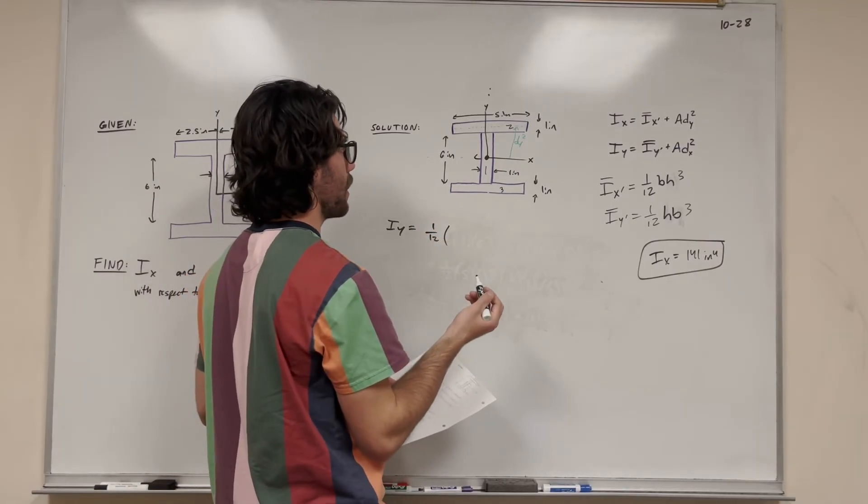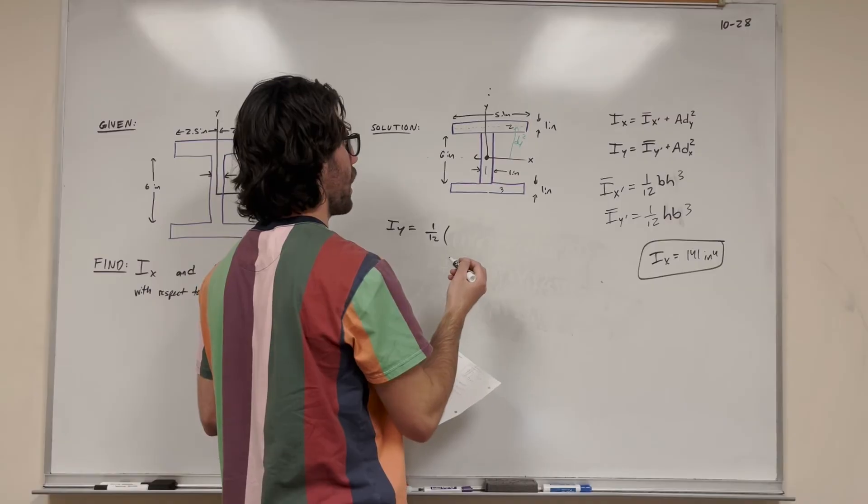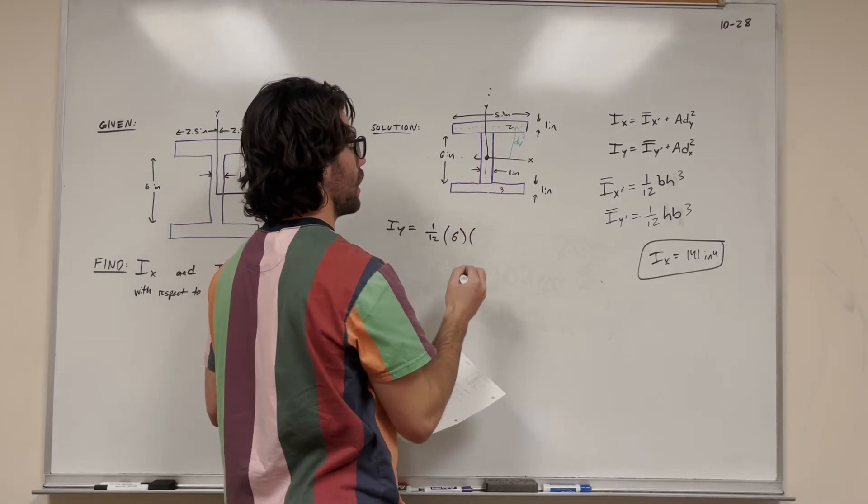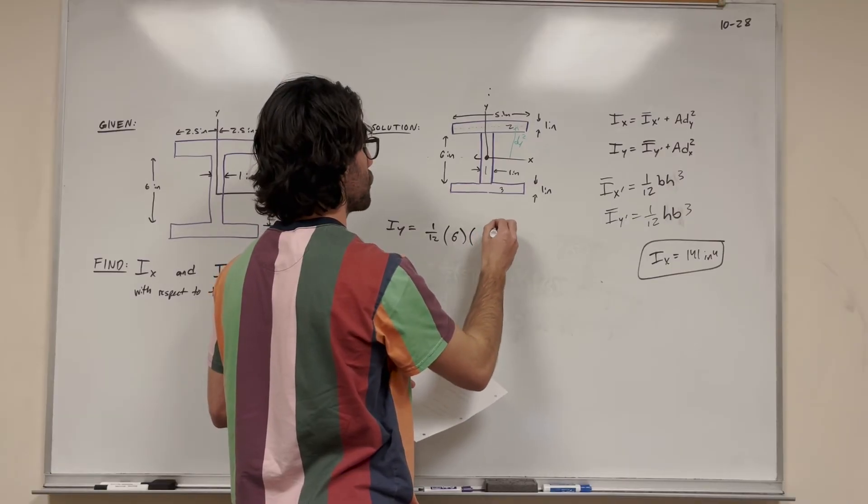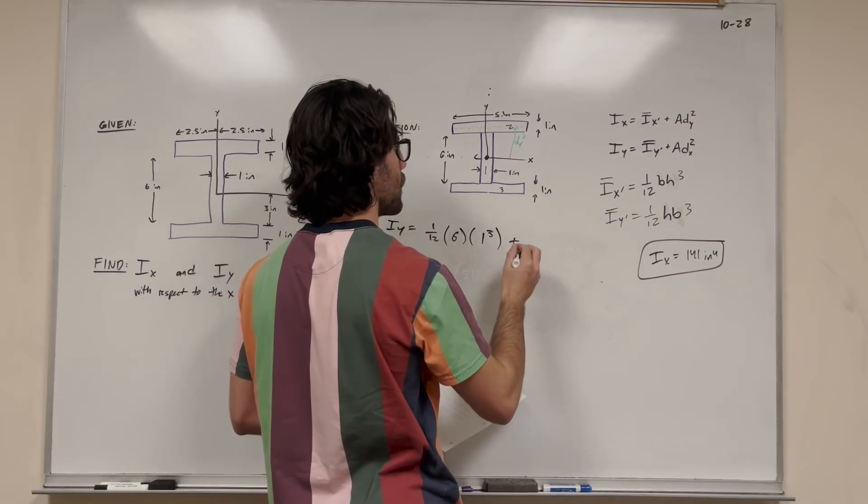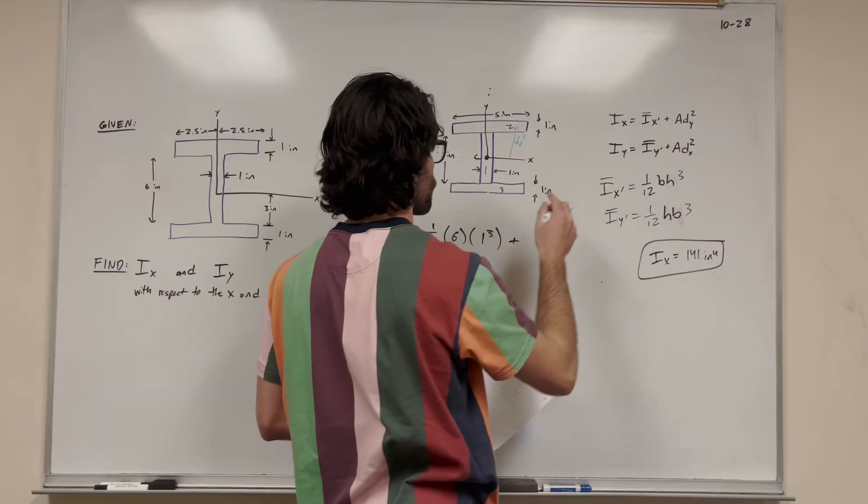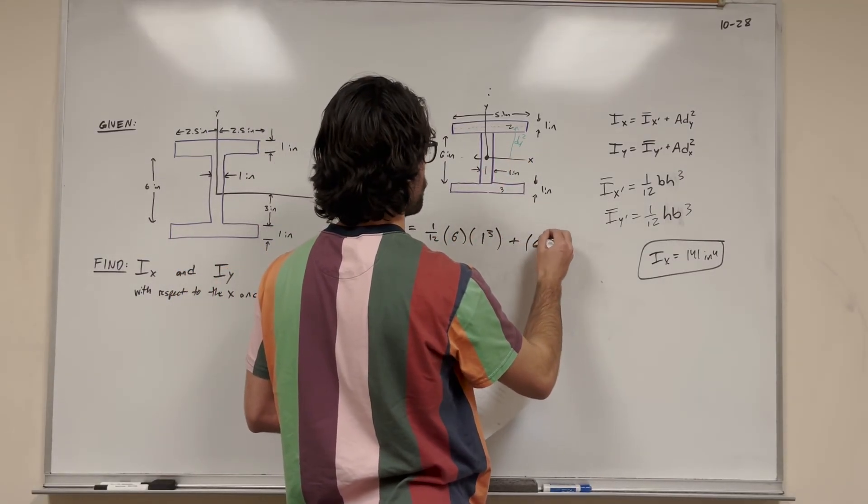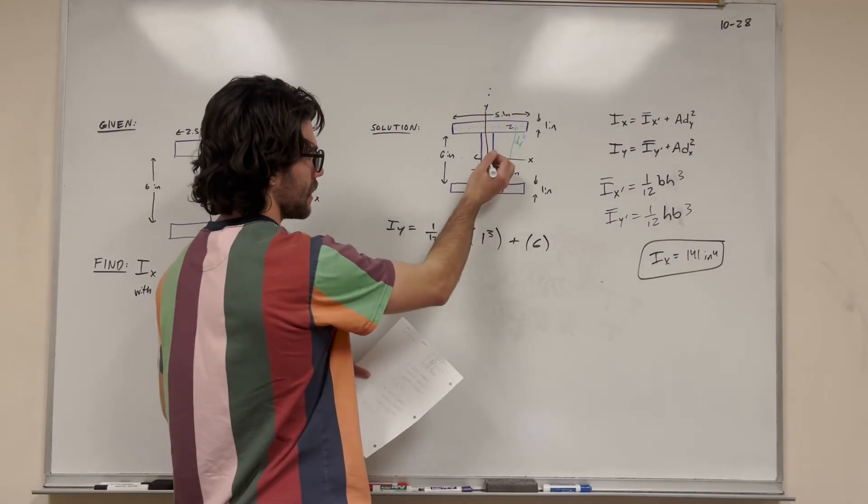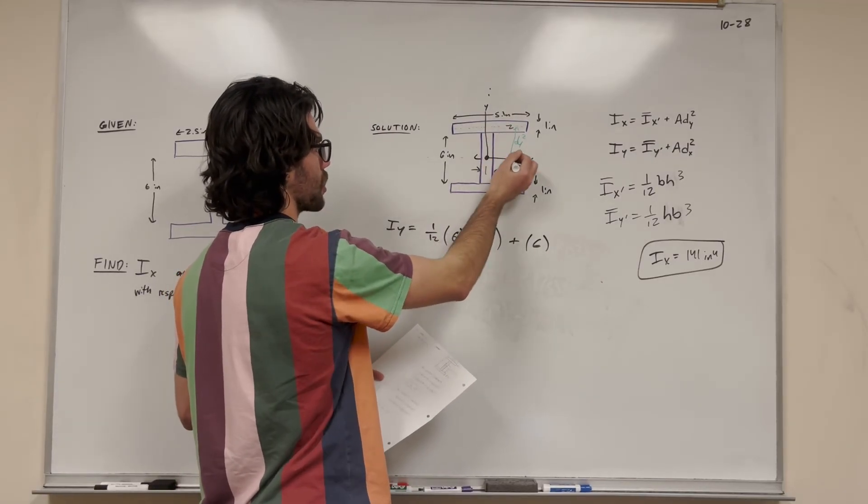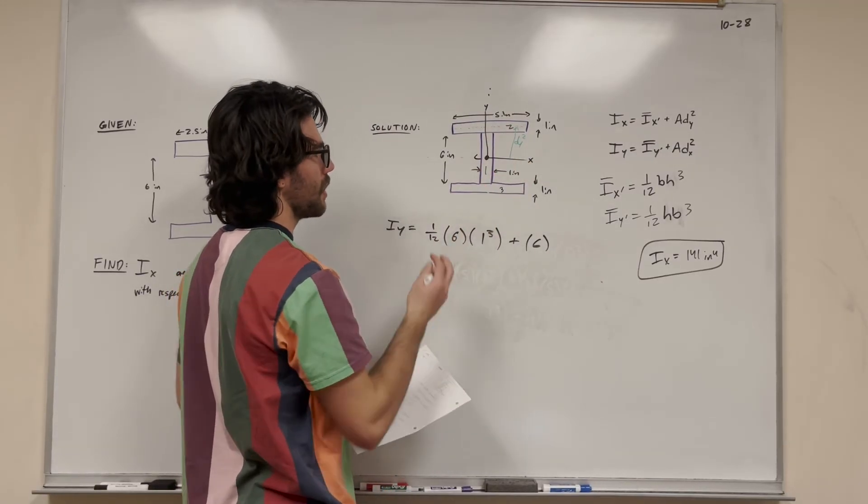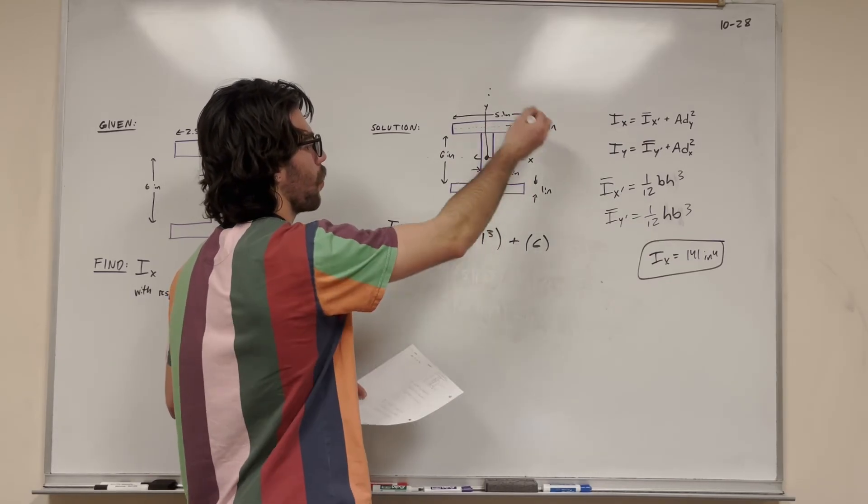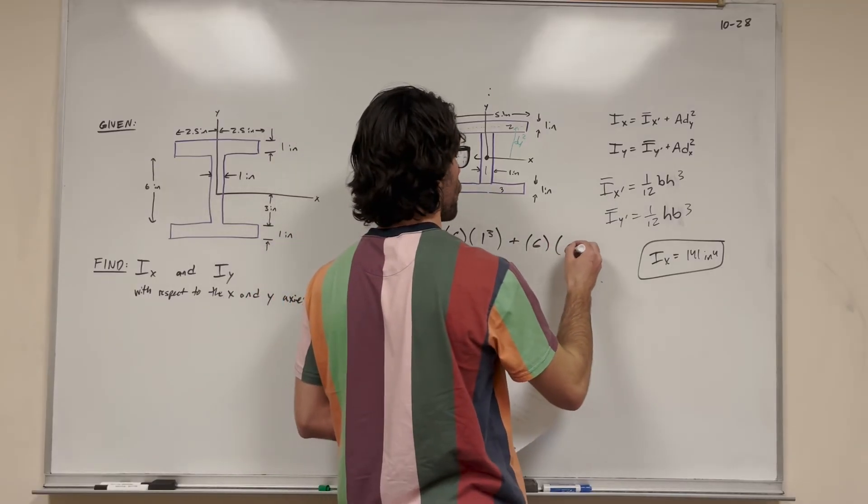For shape 1, height is 6 and base is 1. We add that to area distance x squared. Instead of going vertical, we're going horizontal. Its area is 6 inches times 1, and then distance x. But the center of mass of shape 1 also lies on the center of mass of the whole shape, so we add 0 squared.